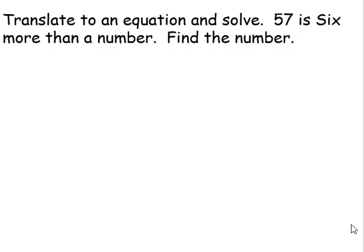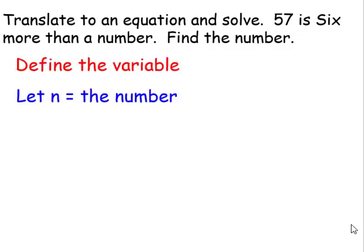First thing we want to do is define the variable. I'm going to say let n equal the number. Now we're going to write the equation. 57 is, is your equal sign. The word 'than' is a turnaround word, so we're going to write 57 is equal to n plus 6.